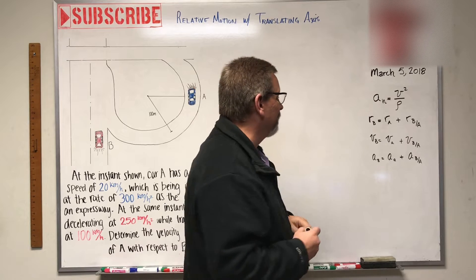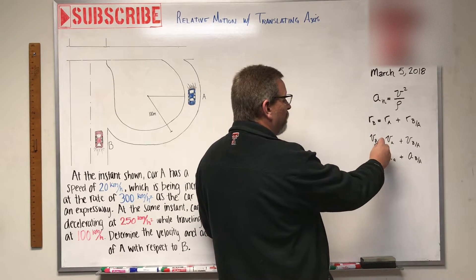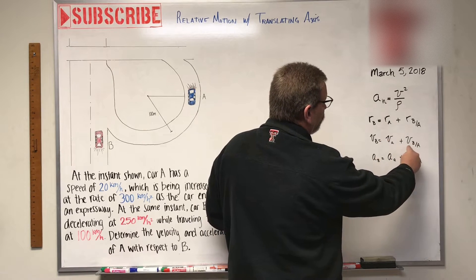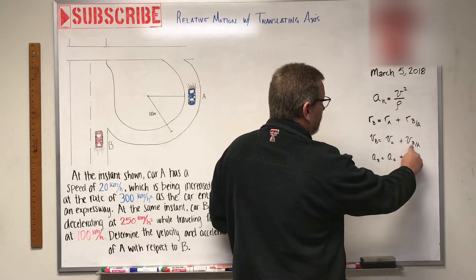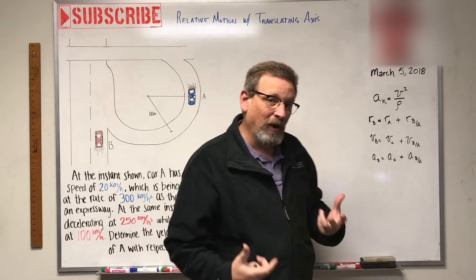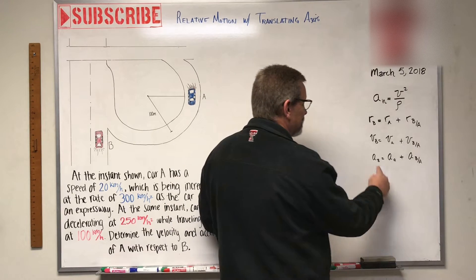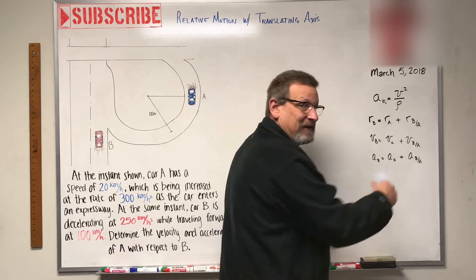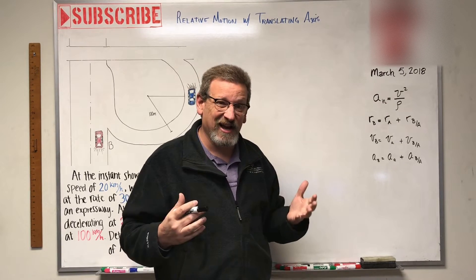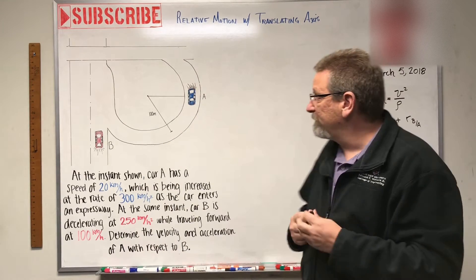A memory trick: the left side equals the right side, and the subscripts go in order — B, A, B, A. If the problem asks for A with respect to B, the same equation applies but swap the letters. The only thing to be careful about is the signs for direction.